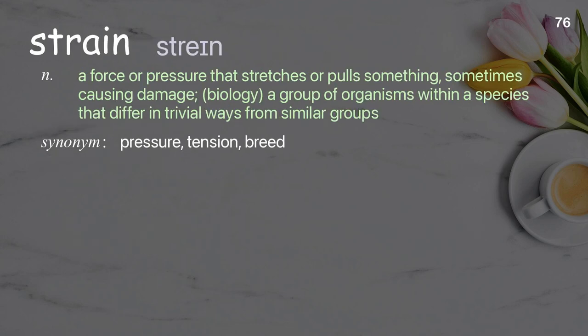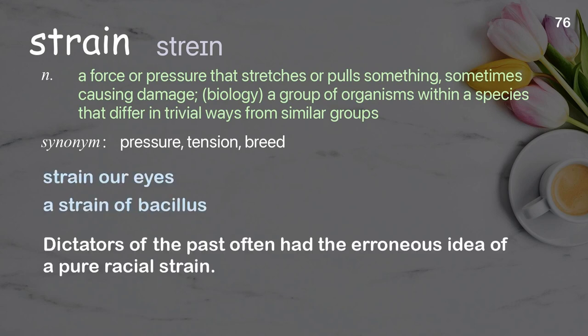Strain: A force or pressure that stretches or pulls something, sometimes causing damage. Biology: a group of organisms within a species that differ in trivial ways from similar groups. Examples: strain our eyes, a strain of bacillus. Dictators of the past often had the erroneous idea of a pure racial strain.